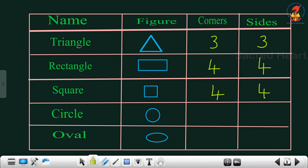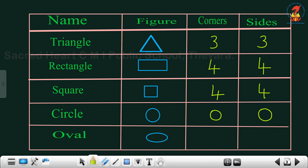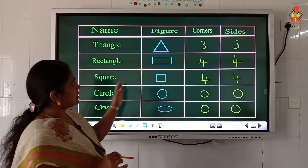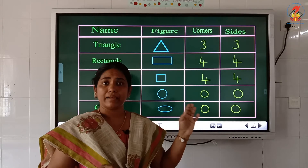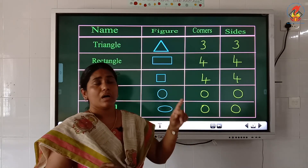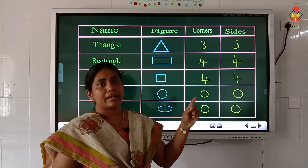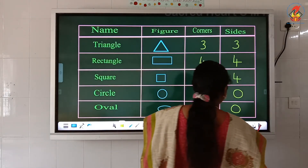Next: circle. The round shape has no sides and no corners, so we write zero sides and zero corners. Last: oval. The oval shape also has no sides and no corners — zero sides and zero corners. Study the worksheet properly and then complete it.